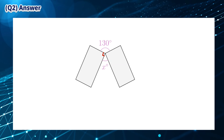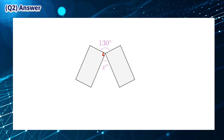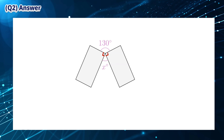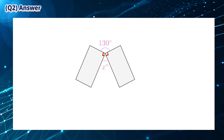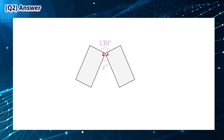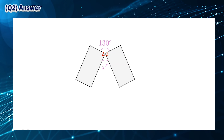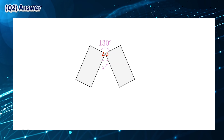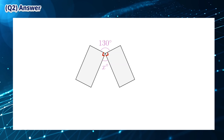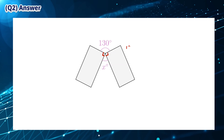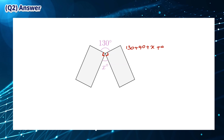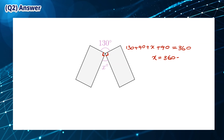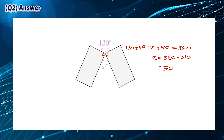The angles around the point where the two rectangles meet are 90 degrees, 90 degrees, 130 degrees, and x degrees. We can write an equation to find x, and we can solve this to find that x is equal to 50 degrees.